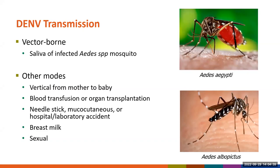Dengue is primarily a mosquito-borne disease spread through the saliva of infected mosquito bites. Aedes aegypti is the most common vector. However, Aedes albopictus can also sustain transmission. Other modes of transmission for dengue virus are less common, but include vertical transmission from a mother to a baby, blood transfusion or organ transplantation, needle stick, mucocutaneous exposure, hospital or laboratory accidents, breast milk, and rarely sexual transmission.